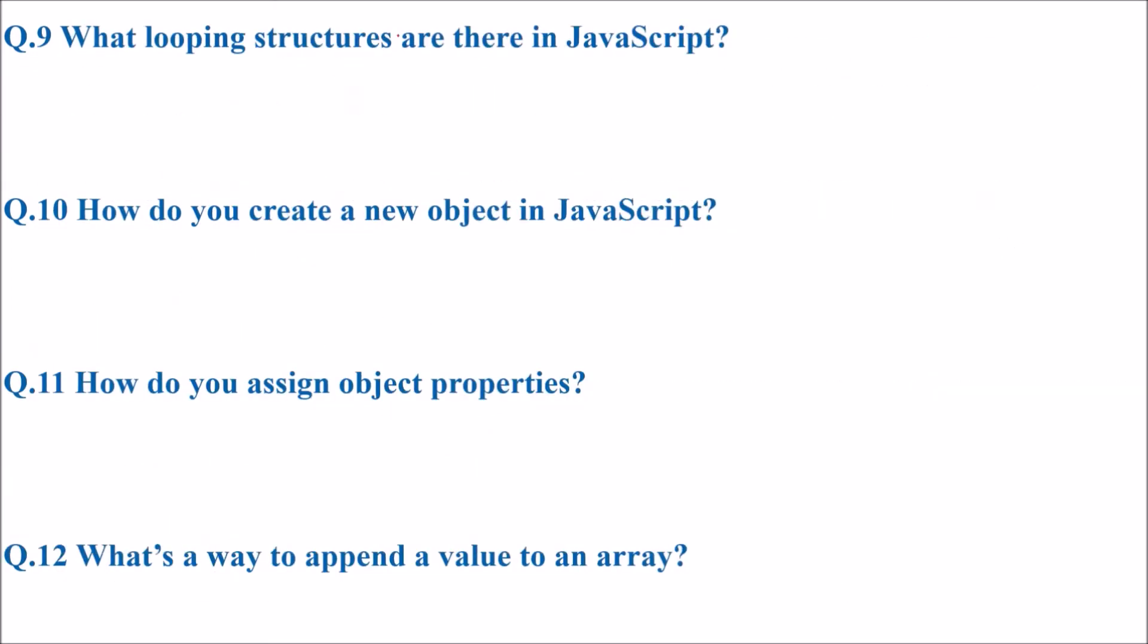What looping structures are there in JavaScript? In JavaScript you will find for, while, and do while. You don't have any for each there.